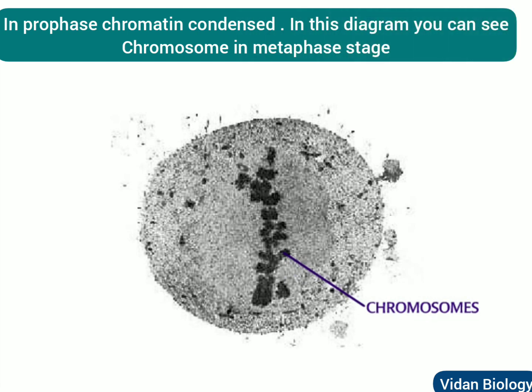During prophase, you can see cell division occurring. The chromatin condenses into the visible structures we know as chromosomes. This electron micrograph shows a cell in metaphase, where the chromosomes are lined up in the middle of the cell.